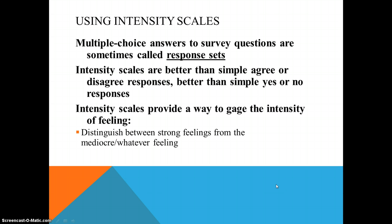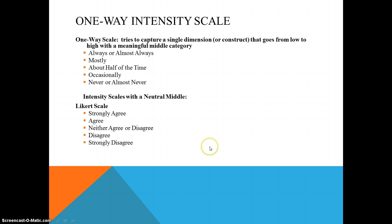Sometimes we want to use intensity scales — the distribution between strong feelings and mediocre feelings. These are more powerful multiple choice questions than a simple agree or disagree because they tell us the intensity of the agreement or disagreement. It could be a one-way intensity scale going from always all the way down to never, or a Likert scale from strongly agree to strongly disagree. In the one-way scale the middle category is meaningful — in this case, about half the time — whereas in the Likert scale they use a neutral middle: neither agree nor disagree, which could also be a non-applicable type of answer.